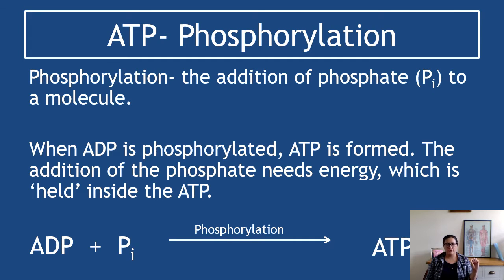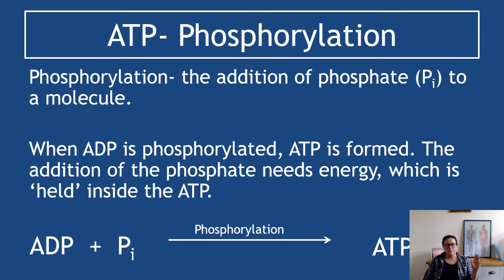Phosphorylation is the addition of a phosphate to a molecule — that is a straight definition. When ADP is phosphorylated, ATP is formed: ADP has the Pi added into it, and that creates ATP. A lot of people ask whether the little 'i' next to the P is essential — the answer is yes. You must have that tiny 'i' next to the P to show that's inorganic phosphate. You don't need to understand what inorganic phosphate means, but you have to have the 'i' there. If you just write ADP plus P equals ATP — no points. The addition of the phosphate, forcing it onto the ADP, needs energy, which is held inside the ATP.